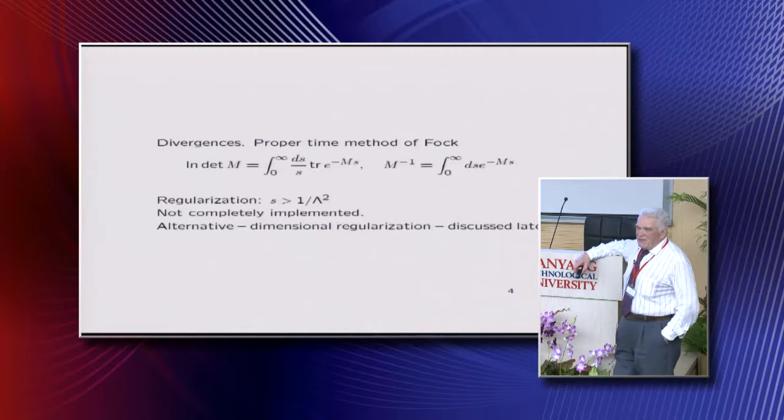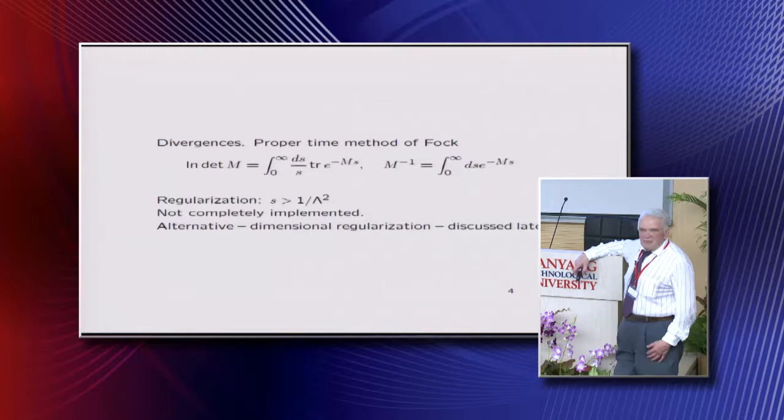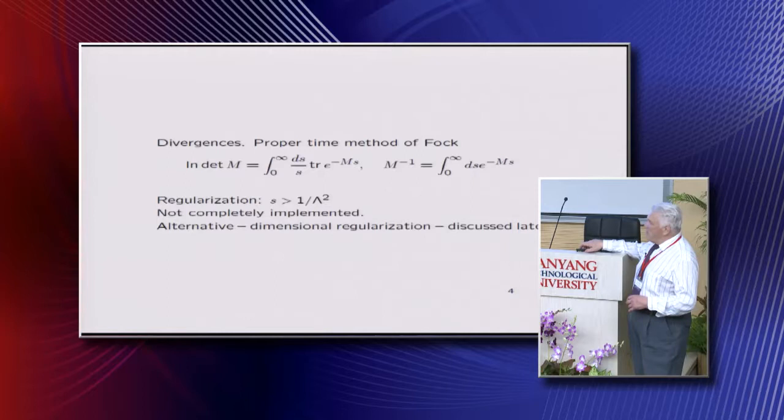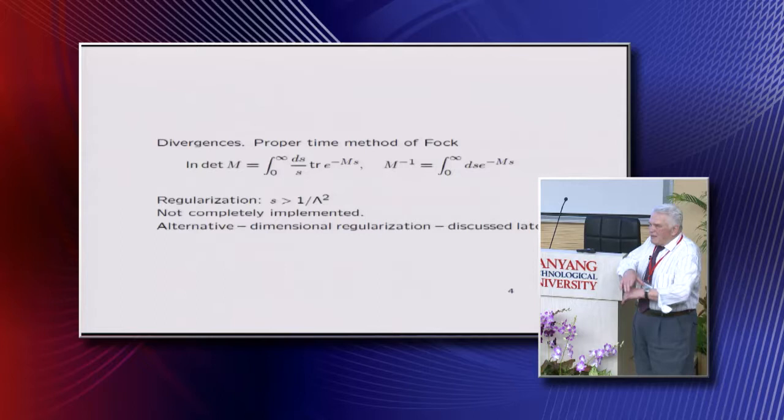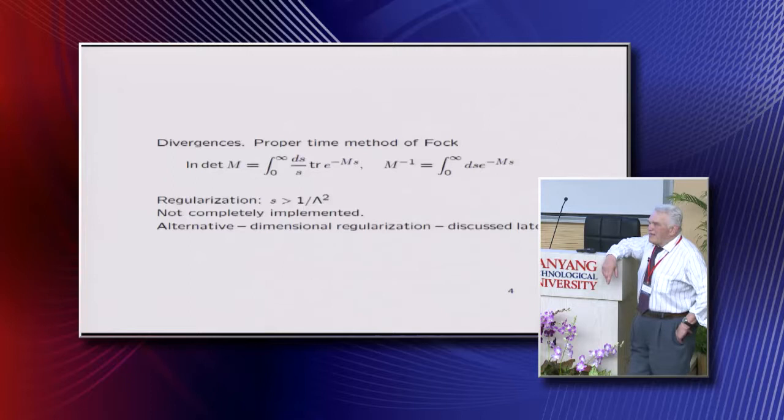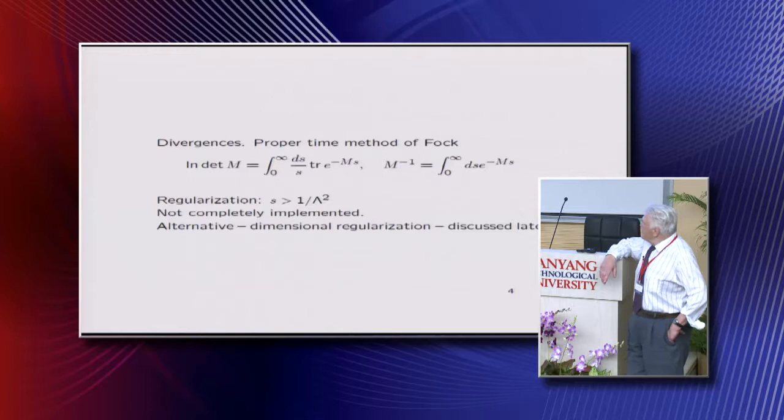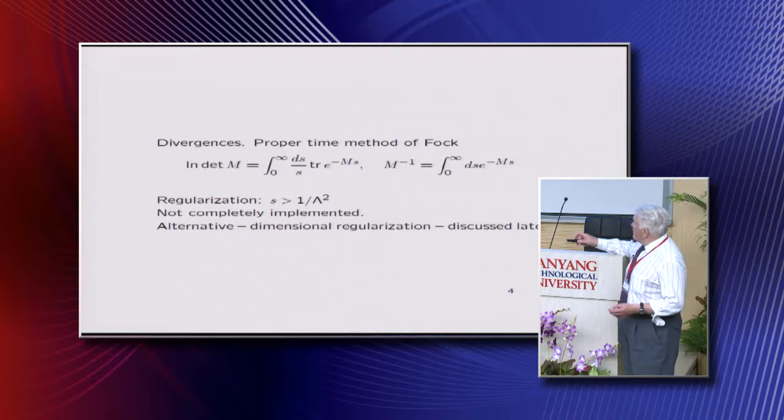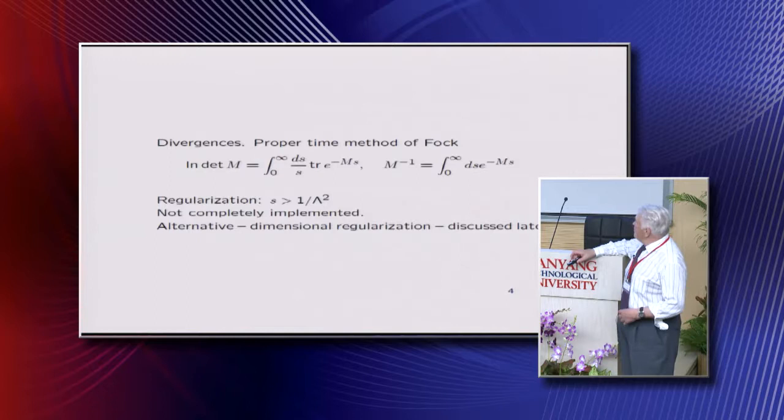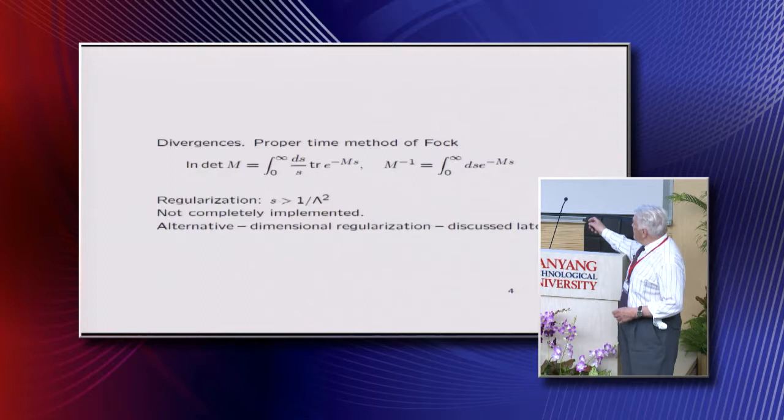Of course, there are divergences. And there are a lot of competing methods of regularizing. And I like the method which is called proper time method by Fock. Now people say about heat kernels and something like that. This is a very long story about development of these things, but paper of Fock of 37 was repeated by Schwinger in his paper in Physical Review with references. And then somehow it was forgotten. But it's remembered in Russia, and so I just want to stress the value of Fock here.